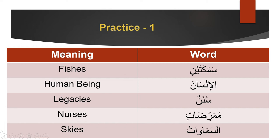The first word we see is samakatain. It's a dual form and it has a tā before the dual ending — just like muslimataini. Samakatain and muslimataini rhyme in the tā'ain part, and muslimataini is feminine, therefore samakatain is also feminine.